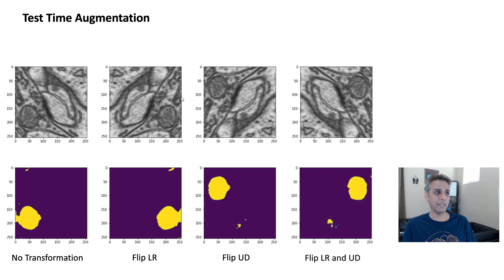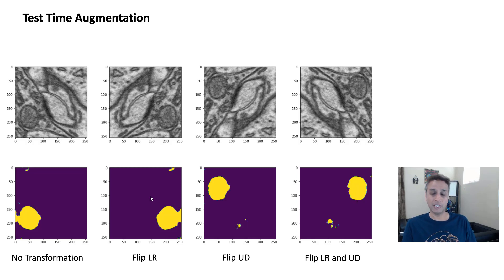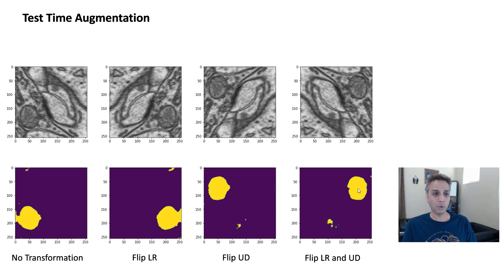If I flip it horizontal and vertical, the mitochondria is now diagonally on the top right, and I'm seeing some artifacts. You can easily see how by combining all of these we can get the best result. When I say combine, I'm averaging them — things with low probability will average out, while the actual mitochondria with high probability will still show up clearly.